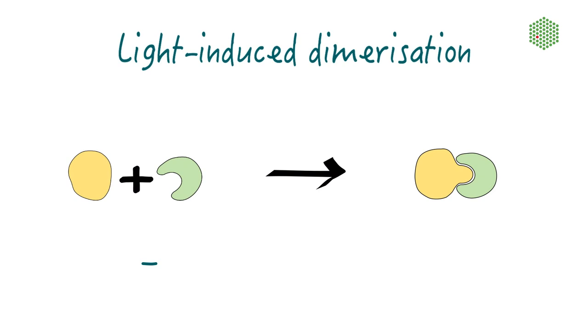The three most prominent dimerization systems are the cryptochrome system, the phytochrome system, and a variety of different LOV domain systems.